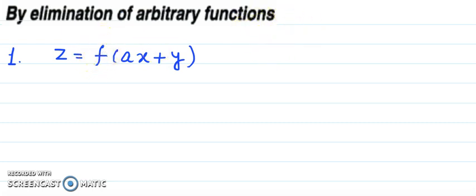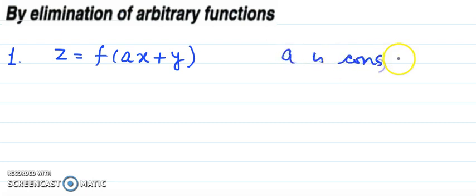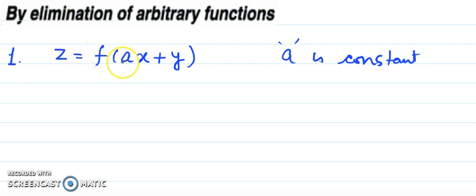Here 'a' is just a constant, not an arbitrary value. Arbitrary means something that can change. Here we don't know what the function is — it can be anything. For example, f of (ax + y), where a is a fixed constant.